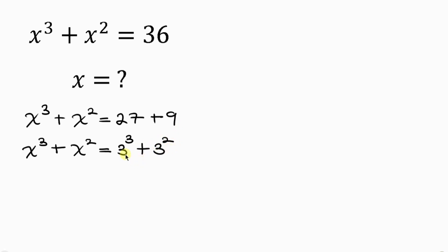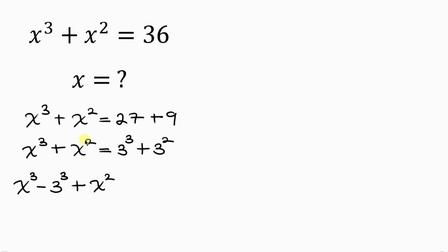Our next step is to move 3³ and 3² to the left hand side. So we have x³ minus 3³ plus x² minus 3² and this is equal to 0.